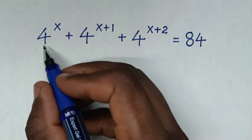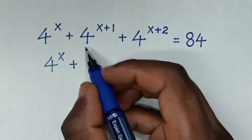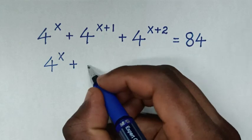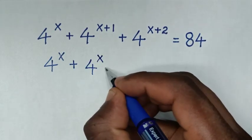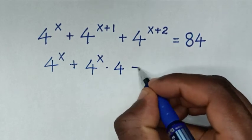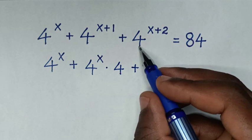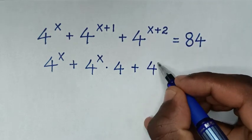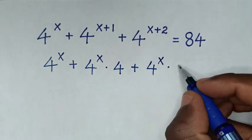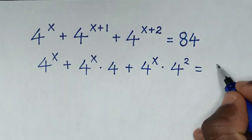In the first step, our equation will be 4 power x, then plus 4 power x plus 1, which is the same as 4 power x times 4 power 1, which is 4. Then plus 4 power x plus 2, which is the same as 4 power x times 4 power 2, is equal to 84.